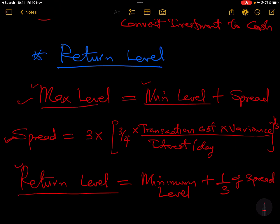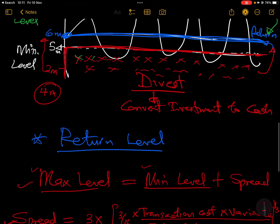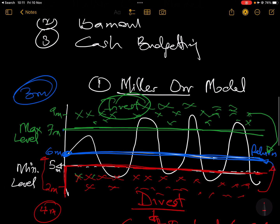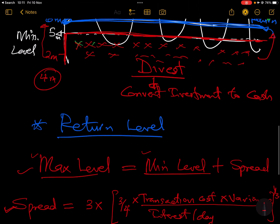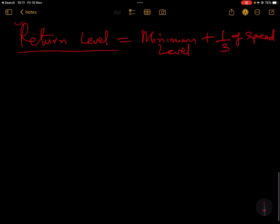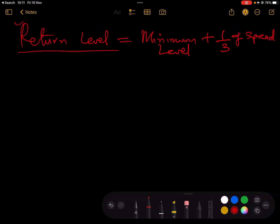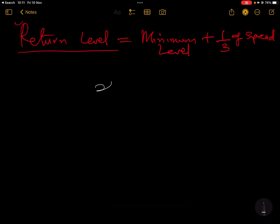That is the summary of Miller-Orr — that is what you will face in the exam, and you'll be asked to explain or interpret what it means for the company. Remember: when you go beyond your maximum level you invest; when you go below your minimum level you divest to increase your cash.